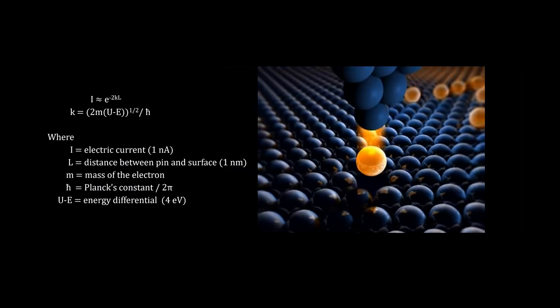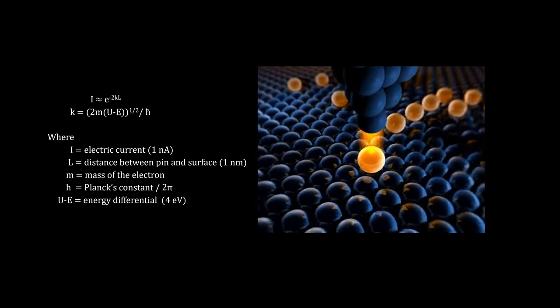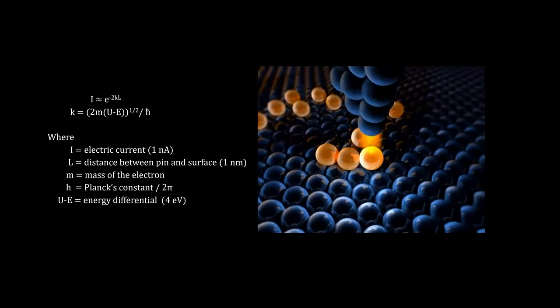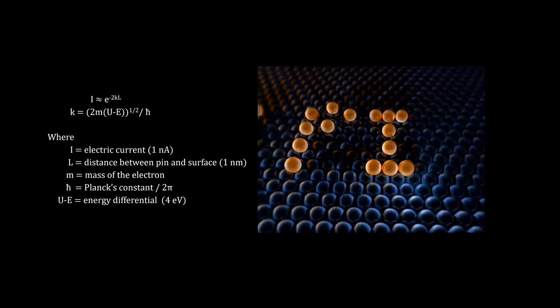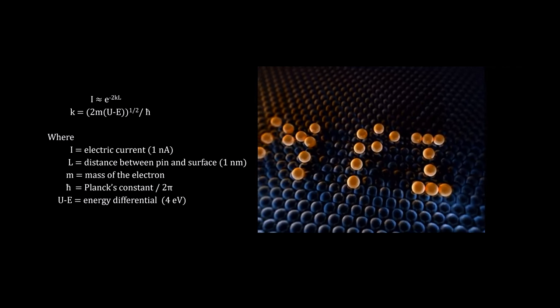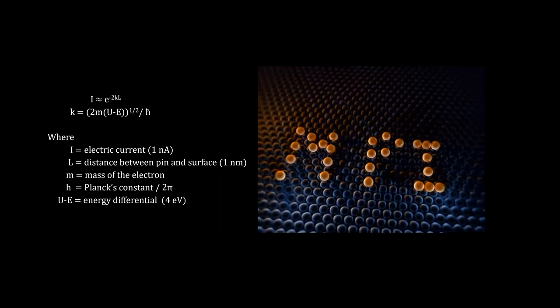Here we see that the scientists at the Max Planck Institute moved the atoms one by one to spell their institute's initials, MPI. The tag is just 6 nm wide.